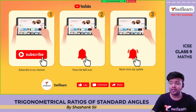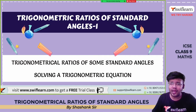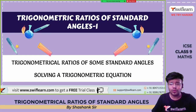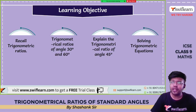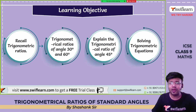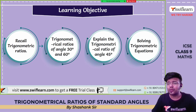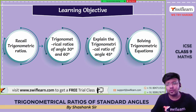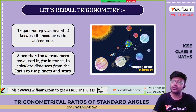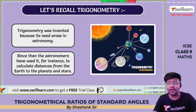I'm Shishang sir and today I'll be teaching you the topic trigonometric ratios of standard angles. The objectives of today's class are: we are going to recall trigonometric ratios, find the values of trigonometrical ratios of 30° and 60°, explain how to calculate the values for 45°, and solve some trigonometric equations.